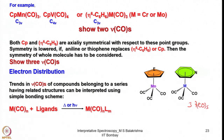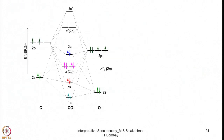Trends in CO stretching frequency for a series of related structures can be interpreted using simple bonding schemes. Starting from homoleptic carbonyls — such as Fe(CO)₅, Cr/Mo/W(CO)₆, Mn₂(CO)₁₀, or Co₂(CO)₈ — UV irradiation or thermal activation in the presence of ligands can yield a series of substituted compounds. Subjecting these to IR spectroscopy reveals the number of CO stretching frequencies and local symmetry.